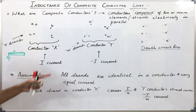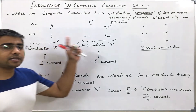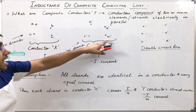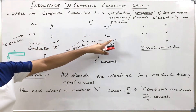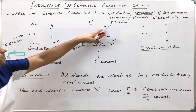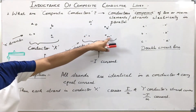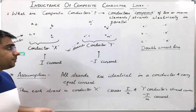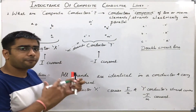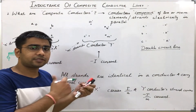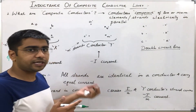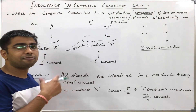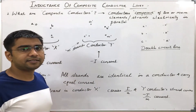Similarly, I have shown here another conductor Y which is having M number of strands: A dash, B dash, C dash, up to M dash. So it is having M number of strands. The formula — the process which we are going to use here — can also be utilized to derive the inductance of multi-circuit lines.